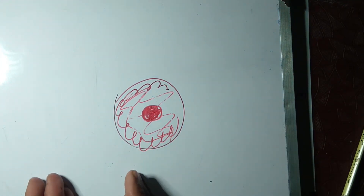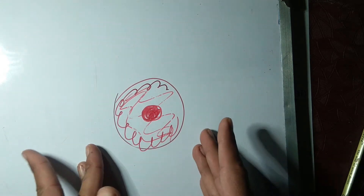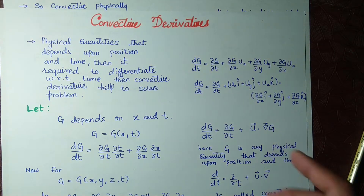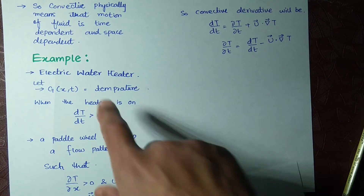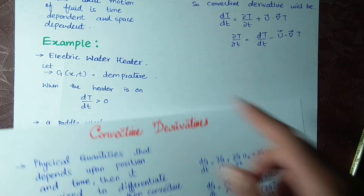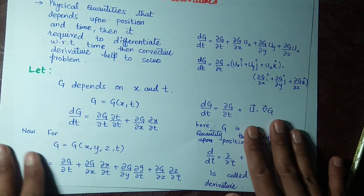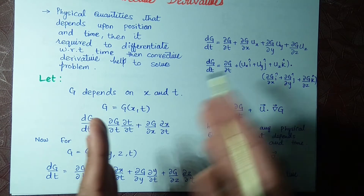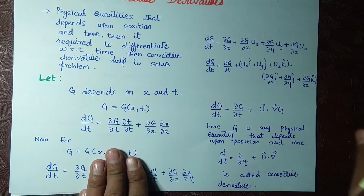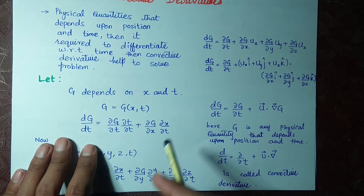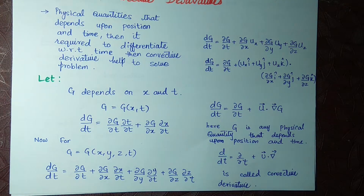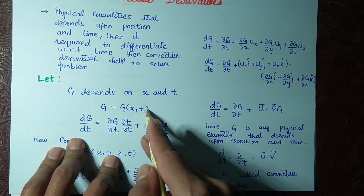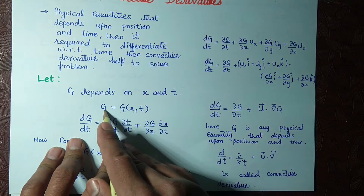This change in position is described by the convective derivative. We will derive it and then look at an example of an electric water heater to make everything clear. We say we have any arbitrary function g that depends on position x and time t, so g = g(x, t).